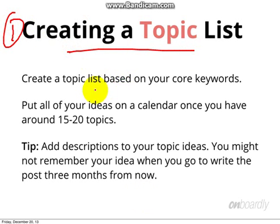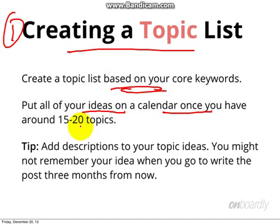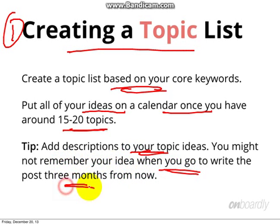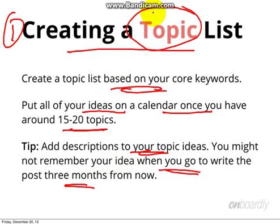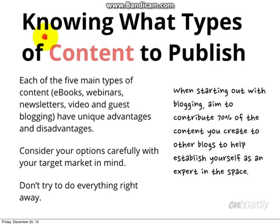The first step is to create a topic list based on core keywords. Basically, put your ideas into a calendar — around 15 to 20 topics — and add a description to each topic idea, because you might not remember your idea when you have to go and write the post three months from now.